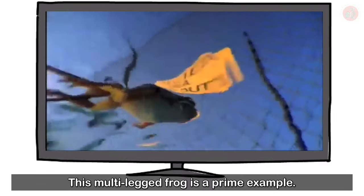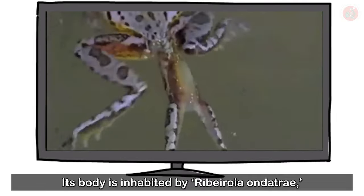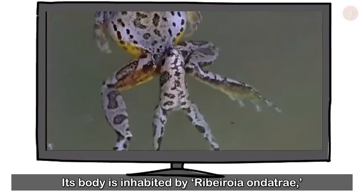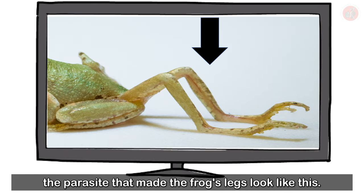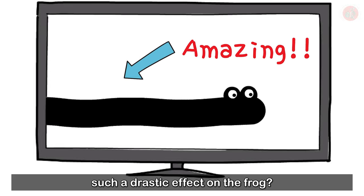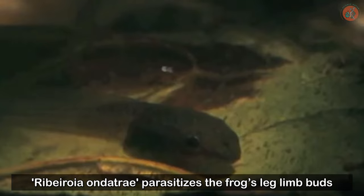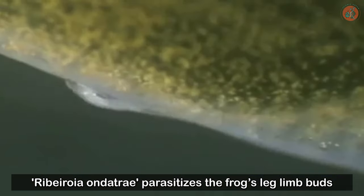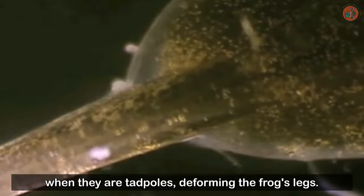This multi-legged frog is a prime example. Its body is inhabited by Ribeiroia ondatre, the parasite that made the frog's legs look like this. Isn't it amazing that a mere parasite can have such a drastic effect on the frog? Ribeiroia ondatre parasitizes the frog's leg limb buds when they are tadpoles, deforming the frog's legs.